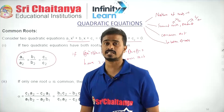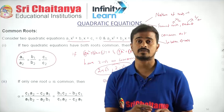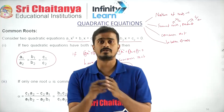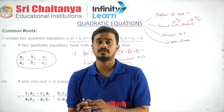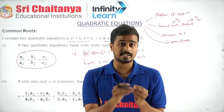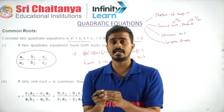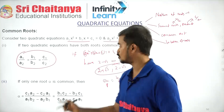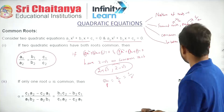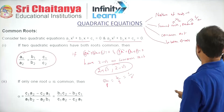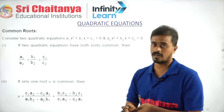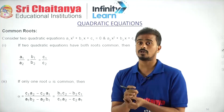If the coefficients are real, complex roots occur in pairs — they are conjugates. If the coefficients are rational, irrational roots also occur in pairs: 2 + √3 and 2 − √3. So we have directly two common roots.